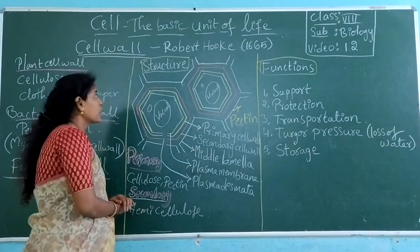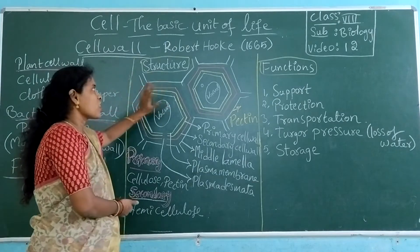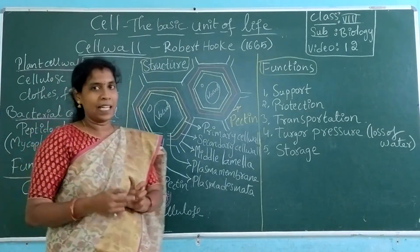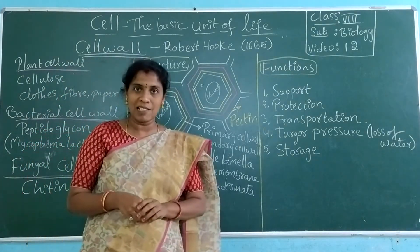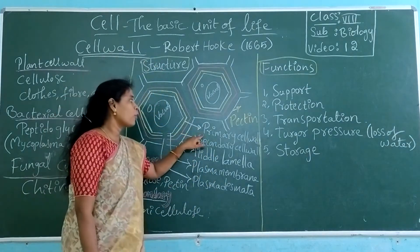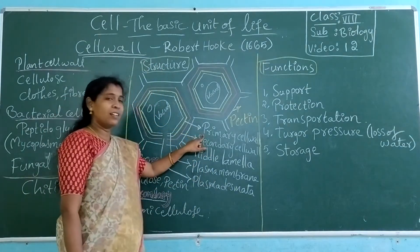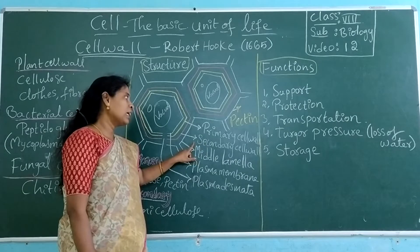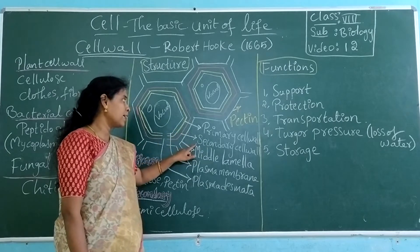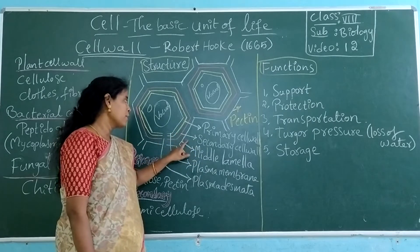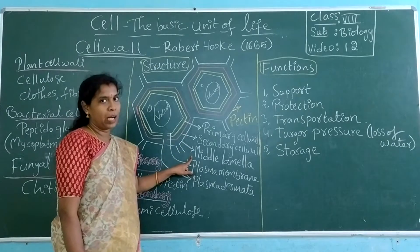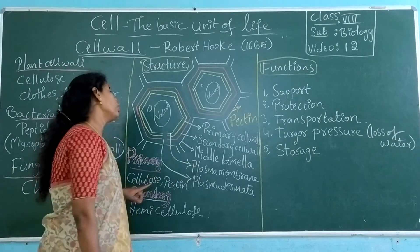Generally if you look at this cell wall, this is the structure and it is made up of three layers. Three layers. The first layer is known as the primary cell wall, the second layer is known as the secondary cell wall, and the third layer is known as the middle lamella.